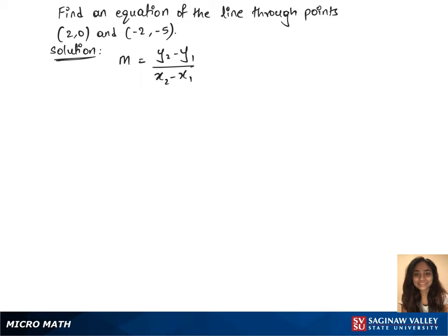Let's plug in the points we have in the formula. y2 is minus 5, minus y1 is 0, over x2 is minus 2, minus x1 is 2, and this gives us 5 over 4. That's the slope.